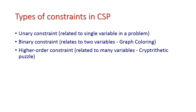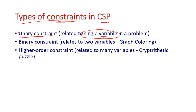The next important topic is the types of constraints in CSP. The first type is a unary constraint, which relates to only a single variable — the single variable's assignment must satisfy the condition. The second type is a binary constraint, which relates to two variables. For example, in graph coloring, if we assign red to one region, the adjacent region must be blue or green.